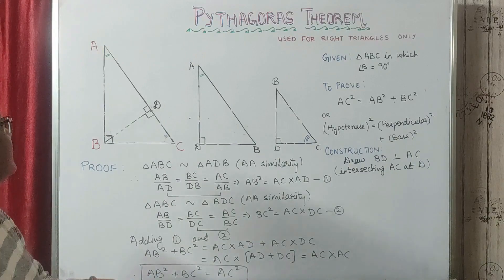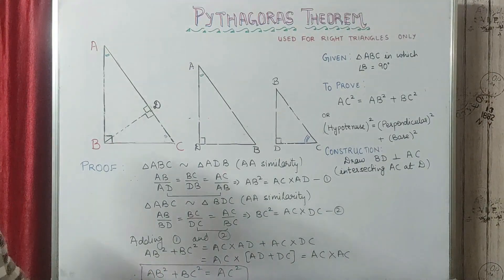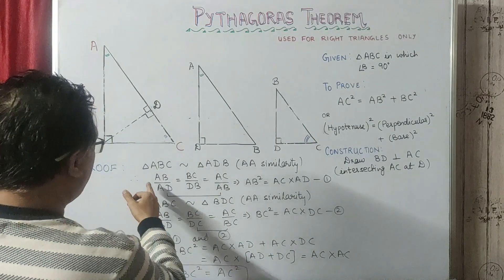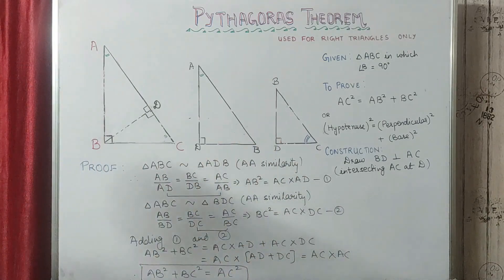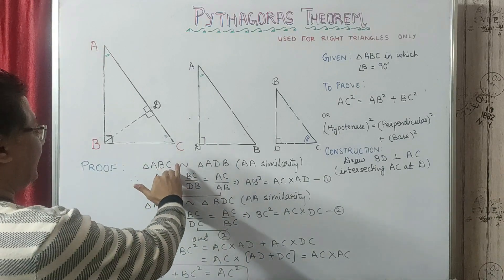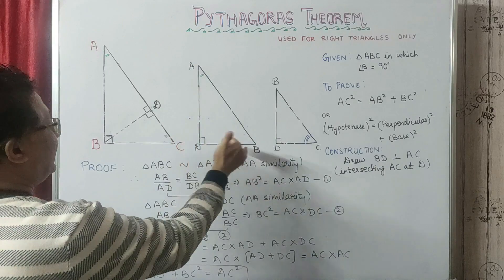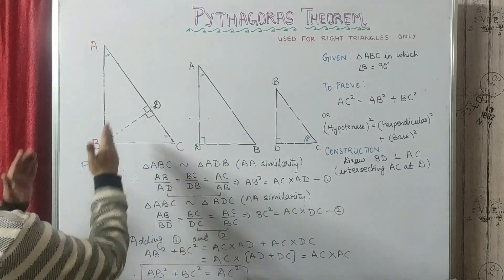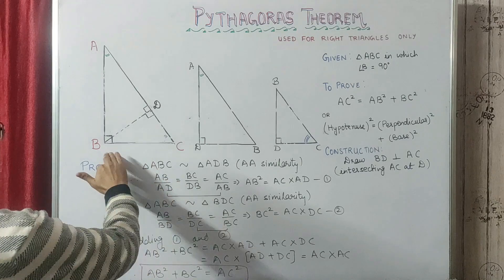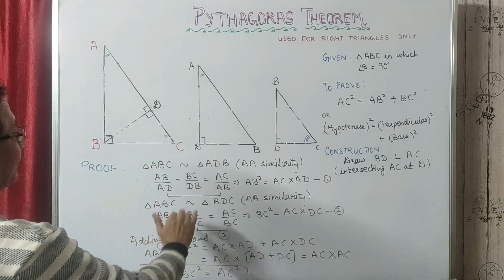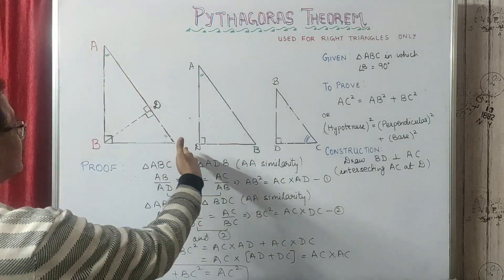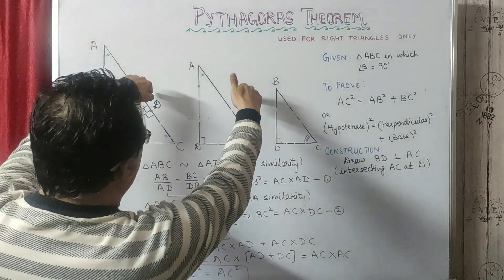So what happens in similar triangles? In similar triangles, corresponding sides are in a proportionate ratio — corresponding sides have a ratio that is equal to each other. When we consider triangle ABC and triangle ADB, we get: AB divided by AD equals BC divided by DB equals AC divided by AB.